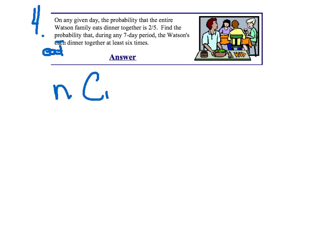So that's my NCR, success to the R, failure to the N minus R. Pause me. Try this setup on your own, and we'll see if we get the same thing. Catch that word at least. Try to pause it and set it up on your own. If you've got that, you've got the hard part out of the way.